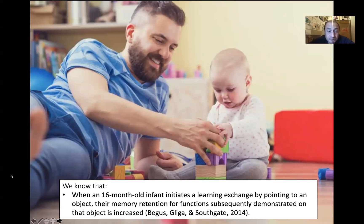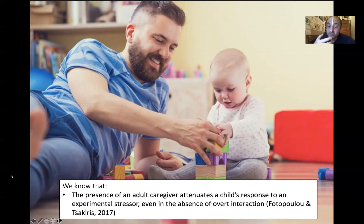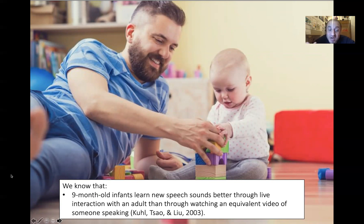We also know that these bidirectional influences matter. When a 16-month-old initiates learning by pointing to an object, their memory for functions demonstrated on the object is increased - that's research from Katerina Beggas and Vicky Southgate. When a parent pays attention to an object while engaged in shared activity with their baby, this immediately increases how attentive that baby is to that object. That's Chen Yu and Linda Smith who found that. The presence of an adult caregiver reduces the baby's response to an experimental stressor, even if they're not directly interacting.